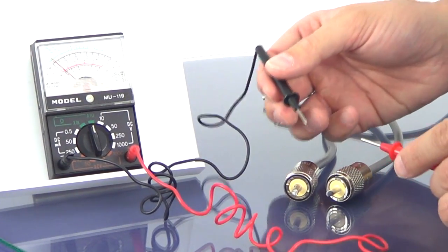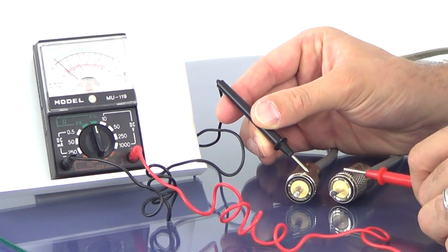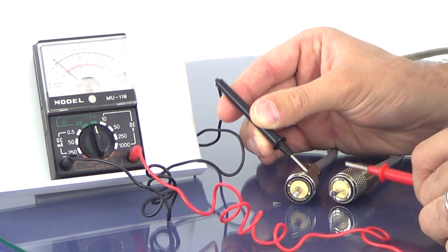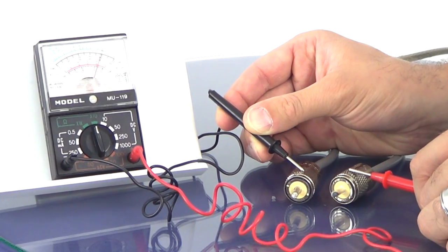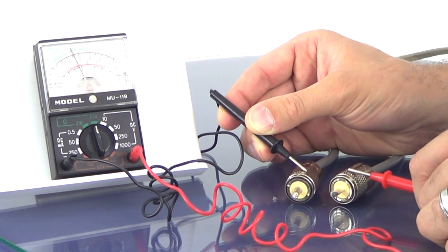Second test we're going to do the same thing only with the shield. So you can just touch the probes to the outsides of the cable and you'll see the needle jumping on the multimeter there.